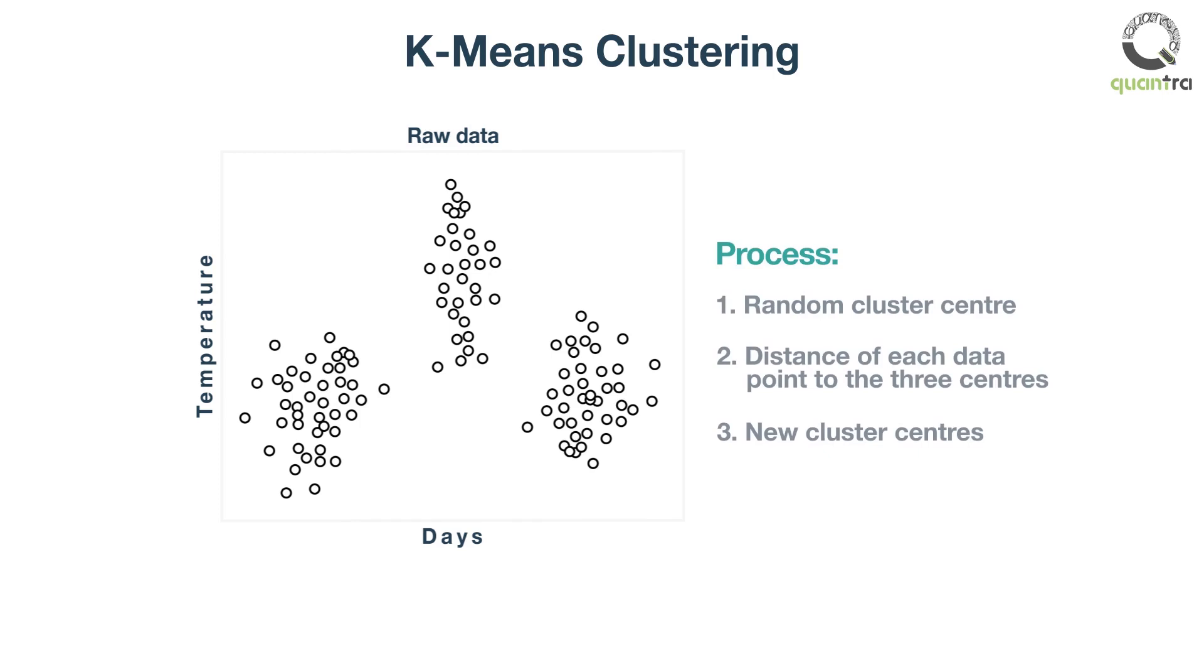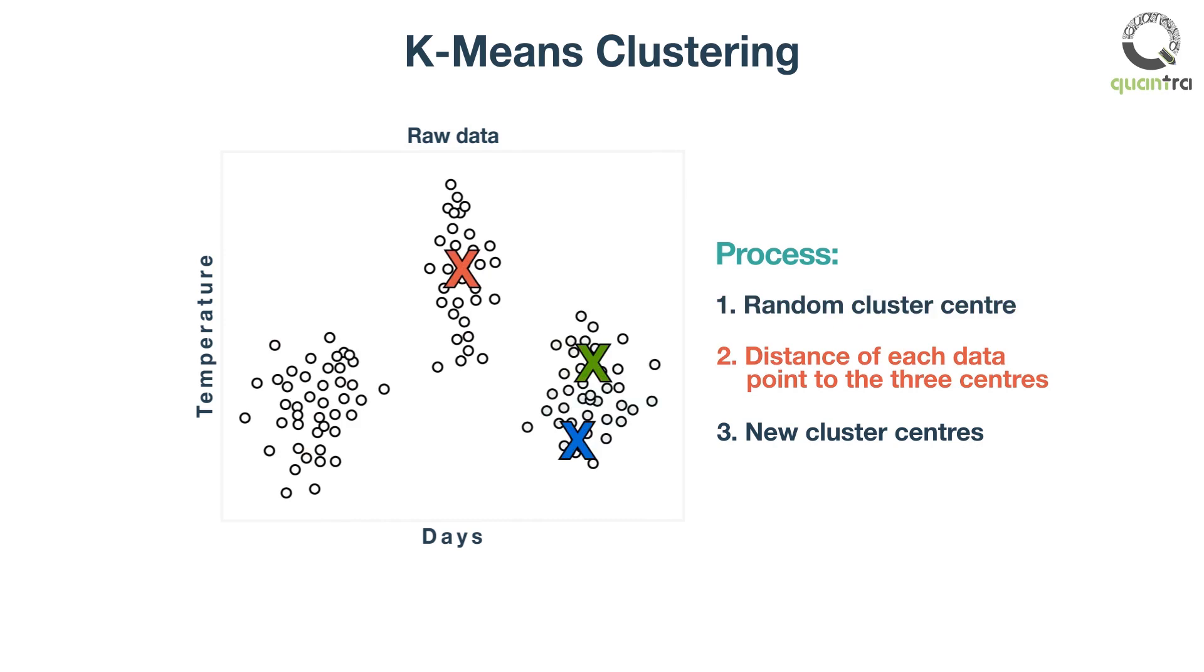To determine which data point belongs to which cluster, we initially assume three random data points as the cluster centers. The three centers are shown in three colors here. Calculate the distance of each data point to the three centers. And whichever distance is the least, we allot the data point to that cluster center. You can see three clusters here.